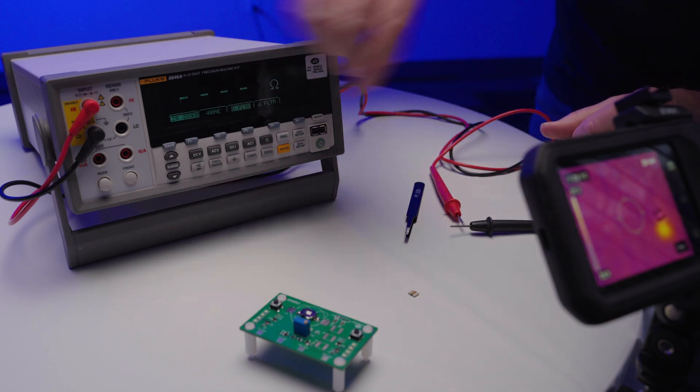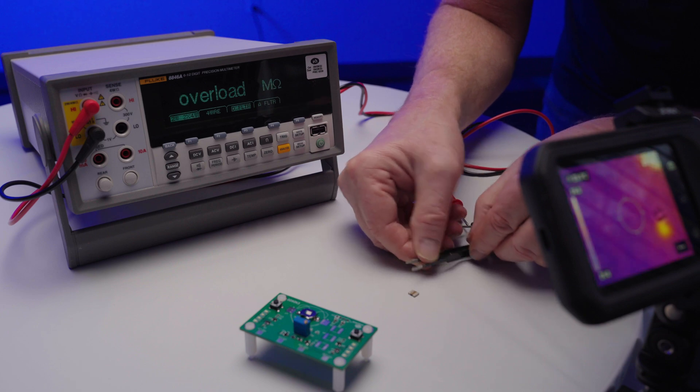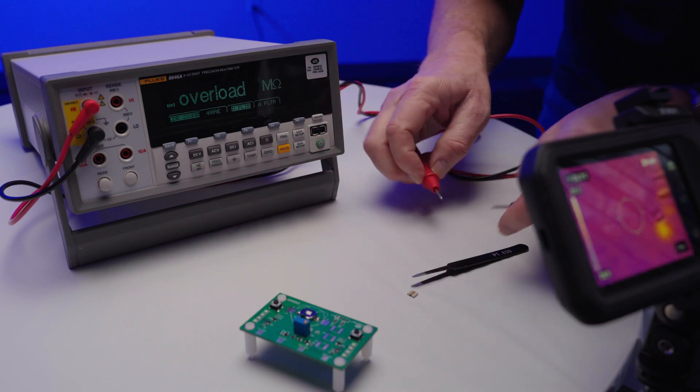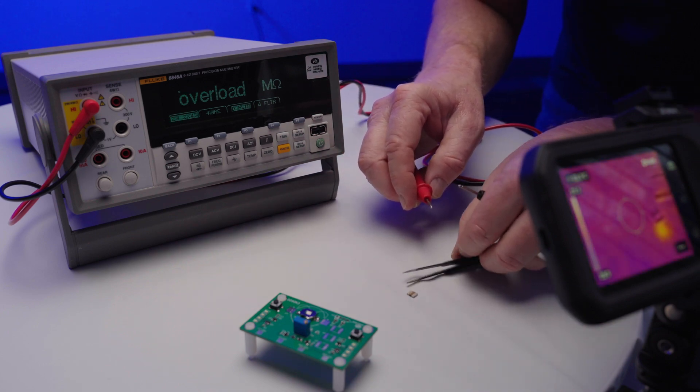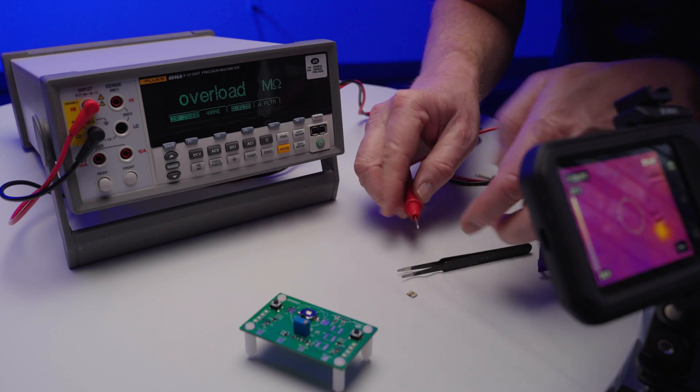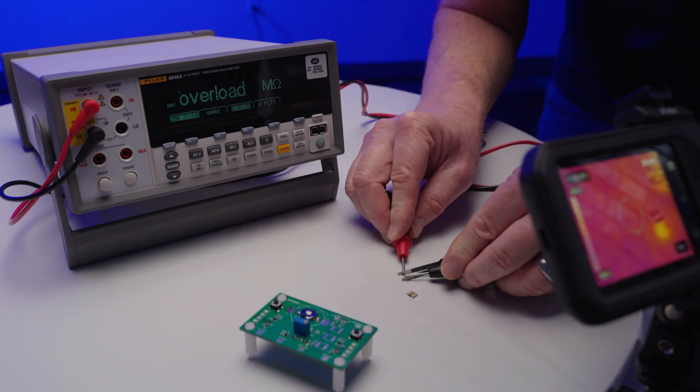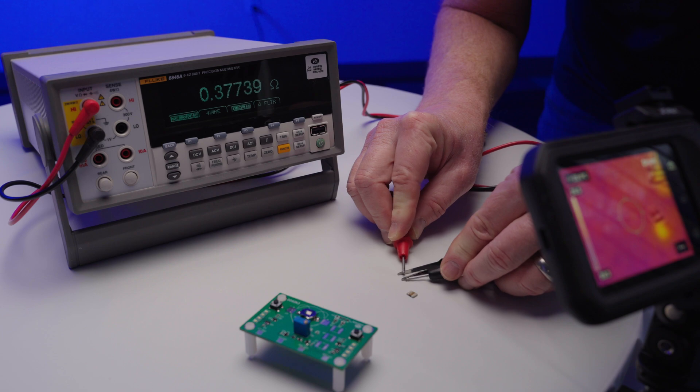We will then use tweezers to short out the device. As you can see, the tweezers resistance is less than a half ohm across.